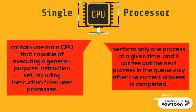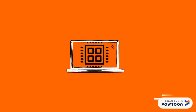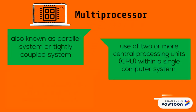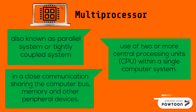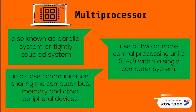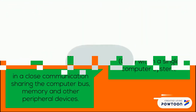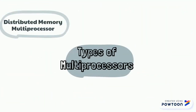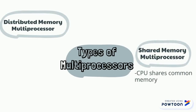The single processor includes instructions from user processors. Multi-processors, also known as parallel systems or tightly coupled systems, use two or more central processing units (CPUs) within a single computer system in close communication, sharing the computer bus, memory, and other peripheral devices.